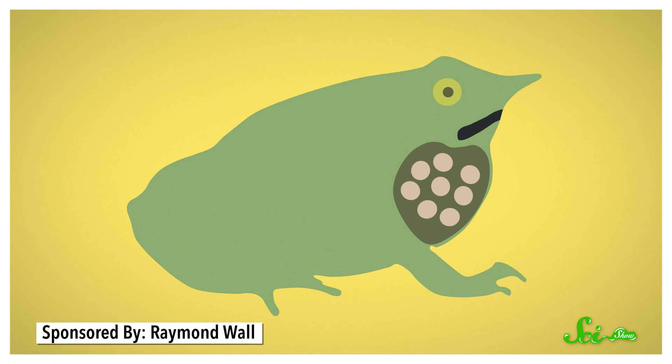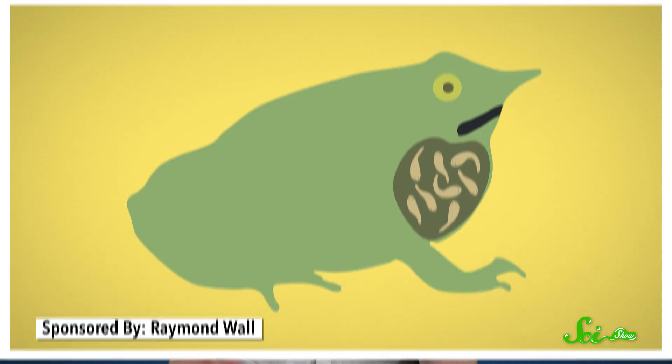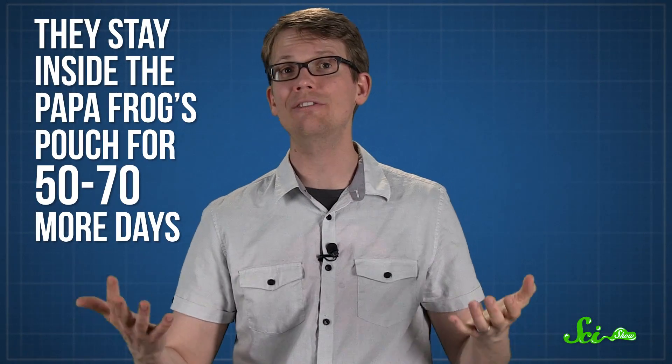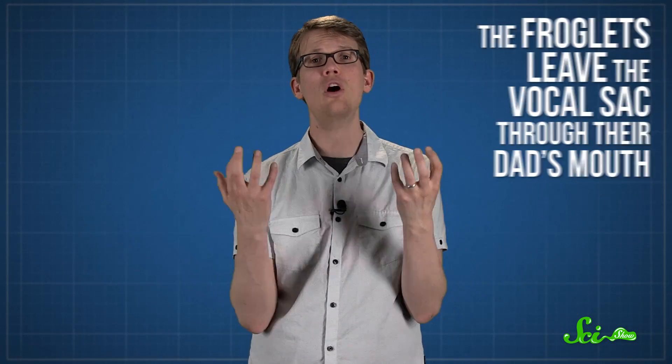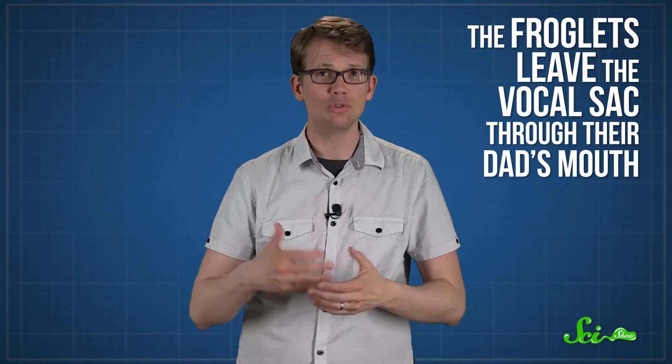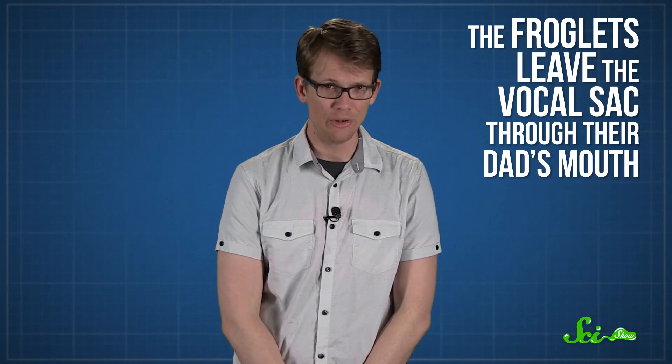Once the growing larvae start wiggling around inside their eggs, he swallows them, not as a snack, but to hold them in his pouch-like vocal sack. A few days later, the eggs hatch into tadpoles, but they stay inside the papa frog's pouch for 50 to 70 more days, as they gradually develop into something more frog-shaped. Once they're fully transformed, the froglets leave the vocal sack and then just hop out into the world through their dad's mouth.